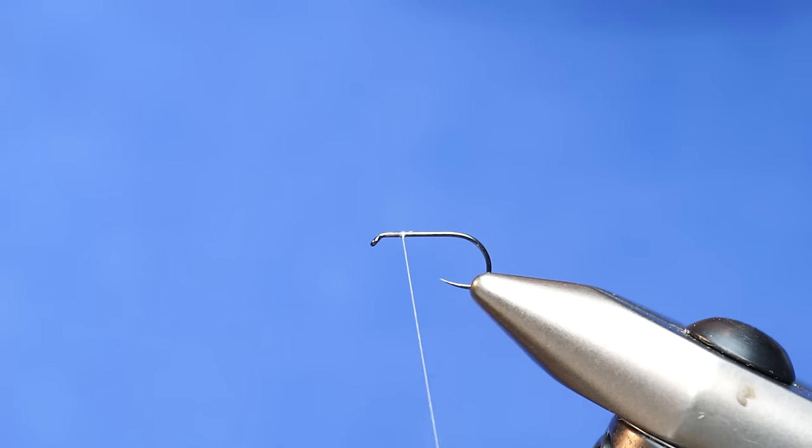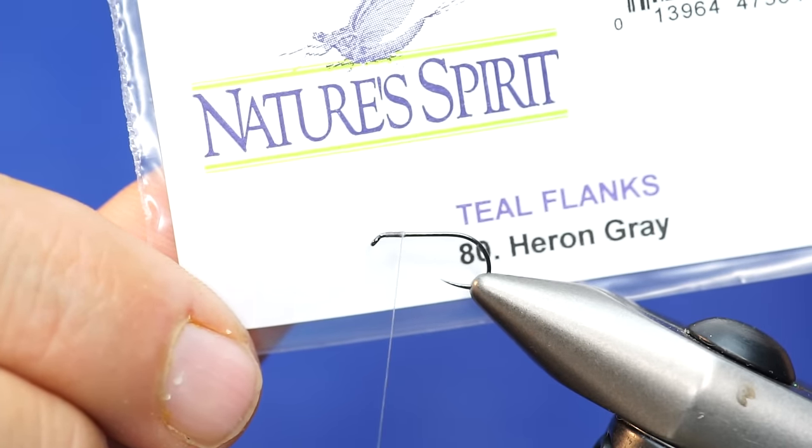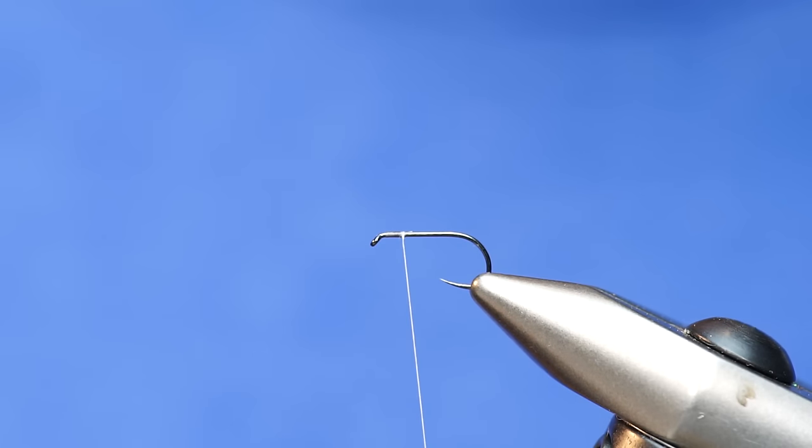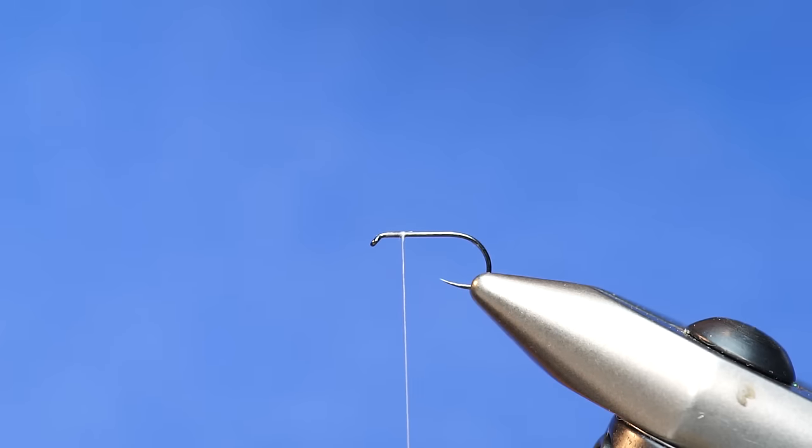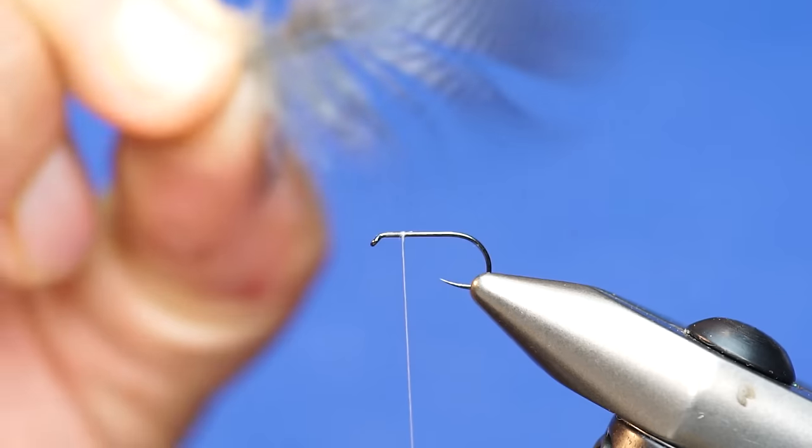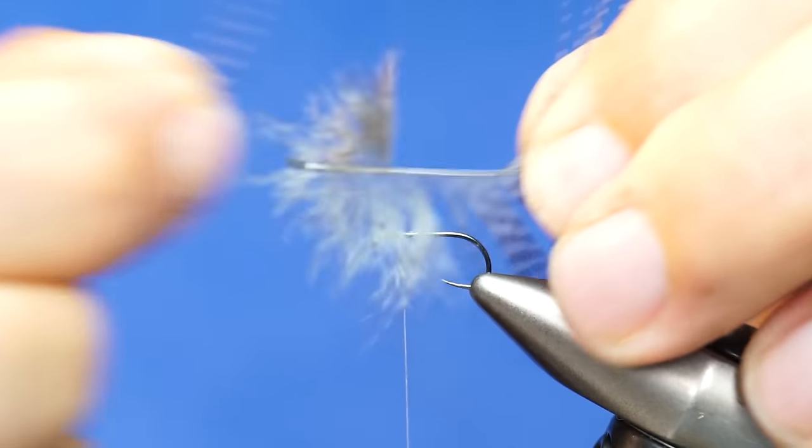The wing is really what makes this pattern fairly unique. It's a really cool style of tying in a wing. We're going to start off with some teal flank from Nature Spirit in heron gray. These Calibatus have a speckled gray and white wing, so this heron gray dyed teal flank works great. You could also use mallard or just natural teal. We're going to grab this feather and strip the fluff pieces off.